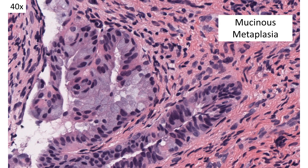The next example is mucinous metaplasia. Here, the cells gain apical mucin. There are a number of different mucinous cells they can look like — sometimes somewhat intestinal, or they can look more like endocervical glandular cells. Either way, they gain mucin in the apical portion of the cell, as you can see here.